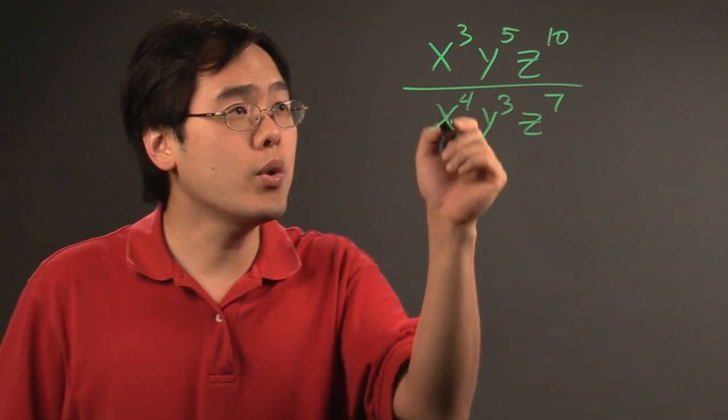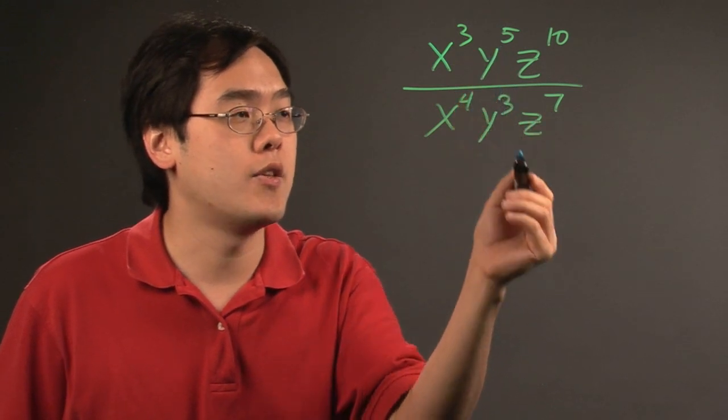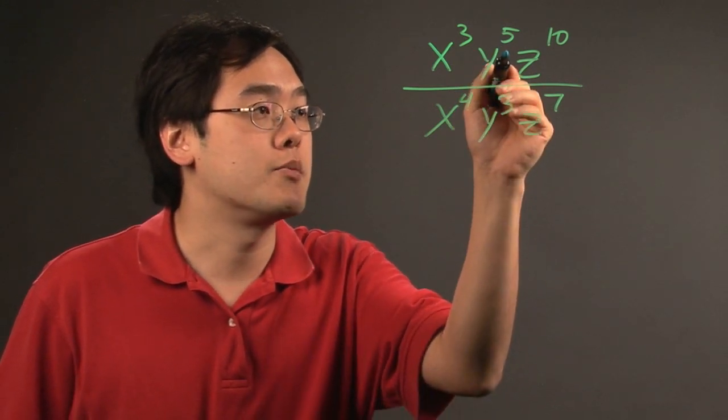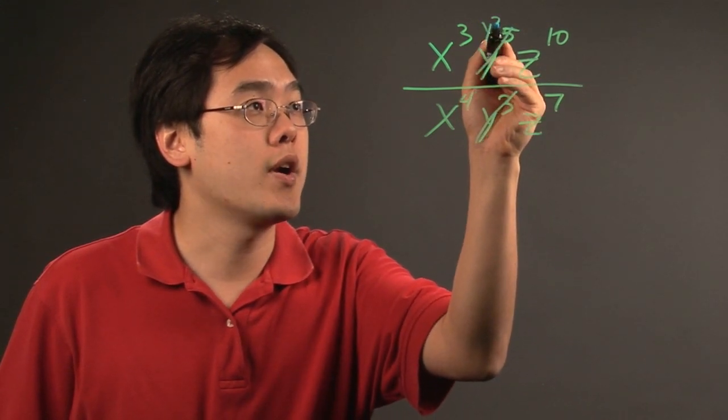Now, we'll get to the x's a little bit later on because the denominator exponent is larger. But if you look at the y to the fifth and y cubed, you can subtract the 3 from the 5, and you're left with y squared.